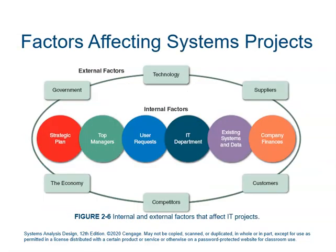This is a really good breakdown of internal and external factors. Obviously these are not all of them, but these are some pretty common ones. The best way to think about it: internal factors are things that we can control or influence in our organization — we know our strategic plan, our managers, what our stakeholders want, those are the user requests. Our IT department will dictate some of the software and hardware requirements we have, and of course our finances. These are things that we can at least control, influence, or understand better.